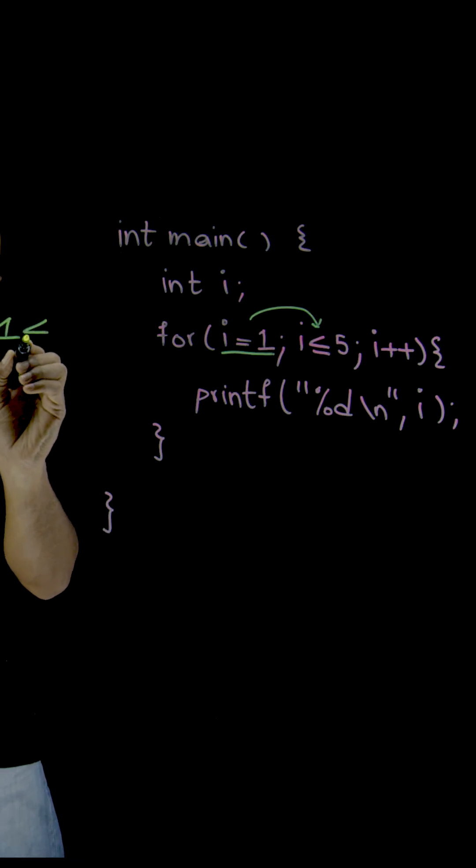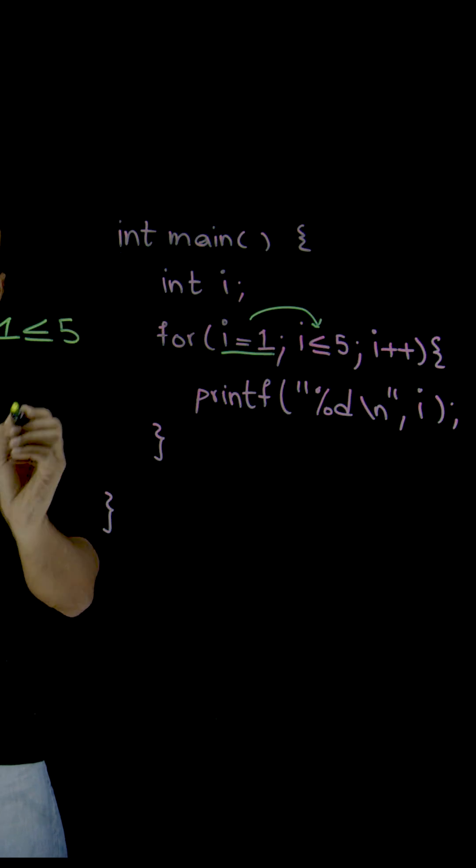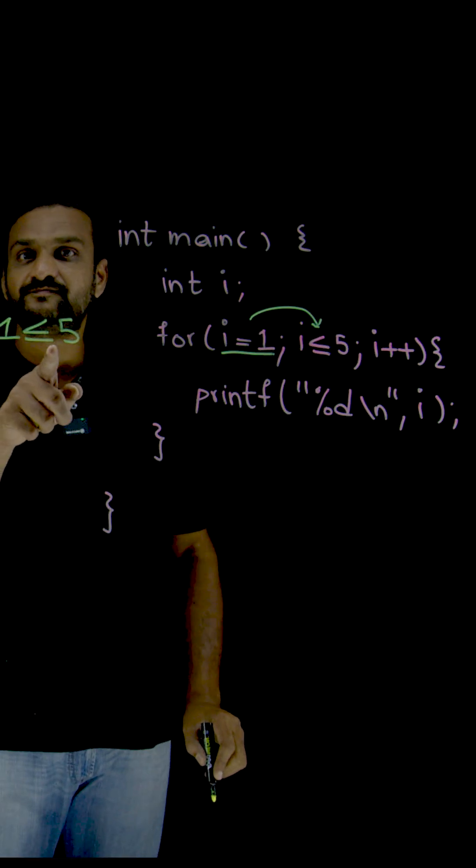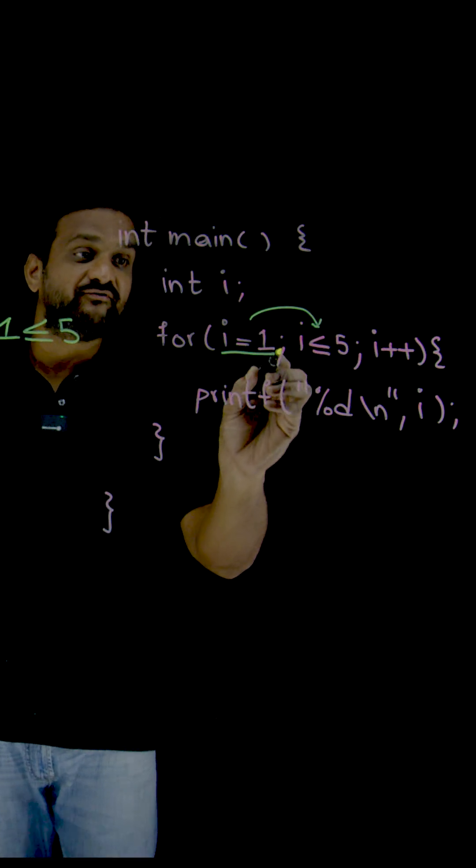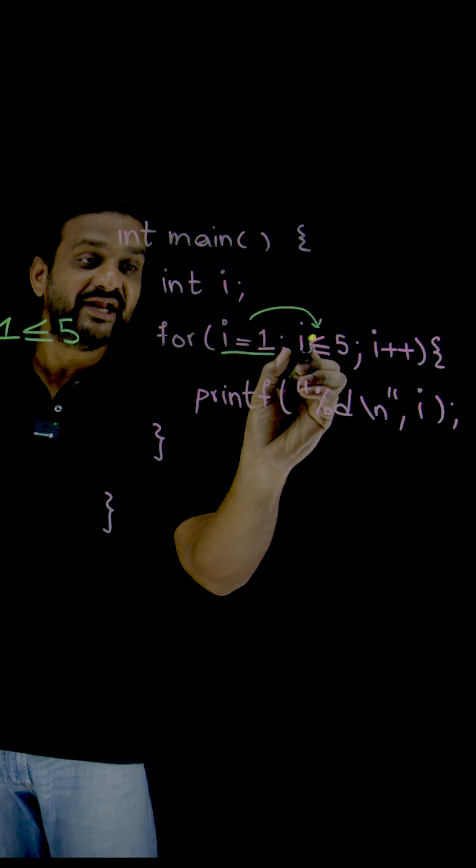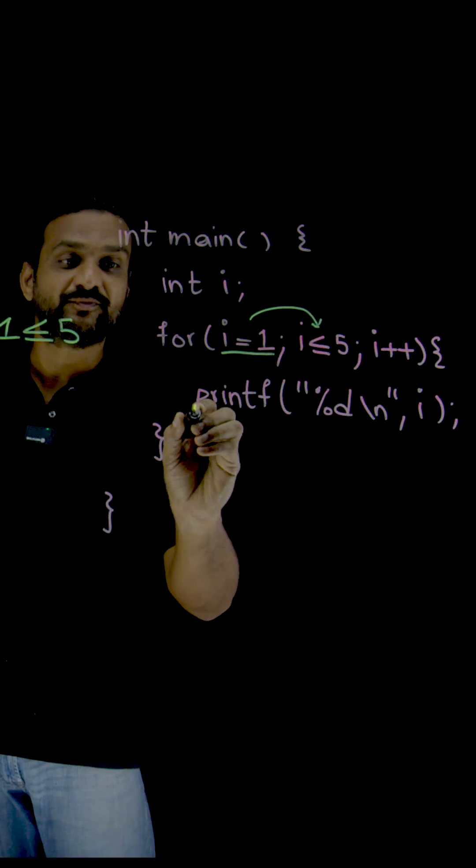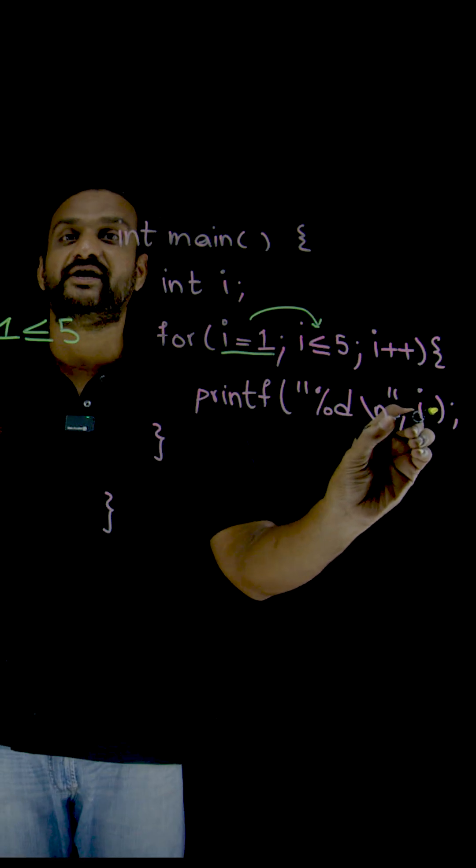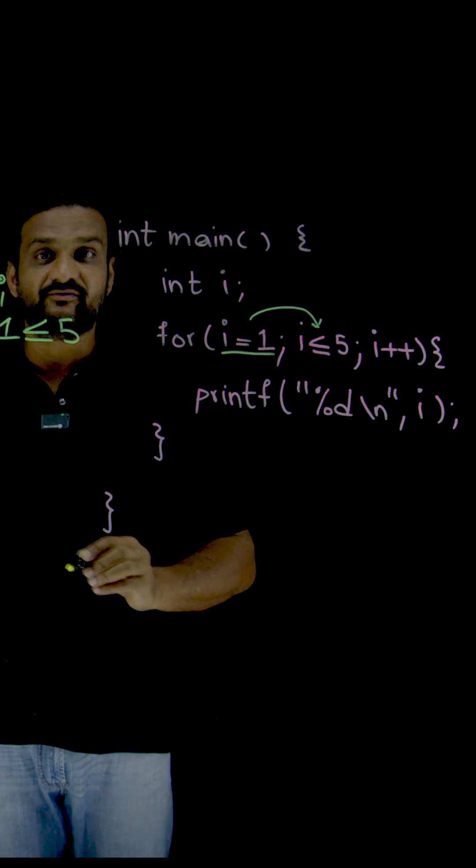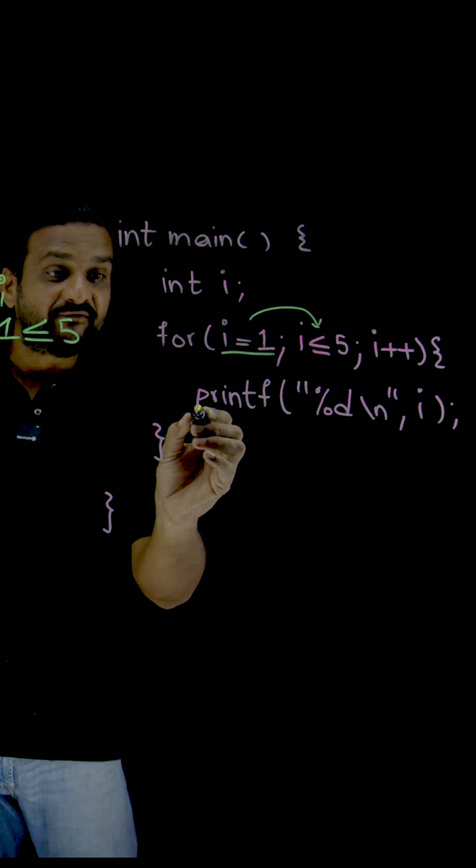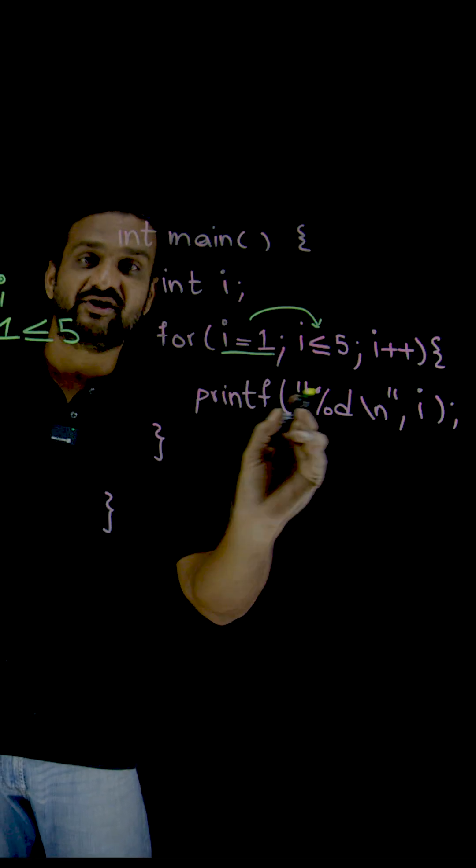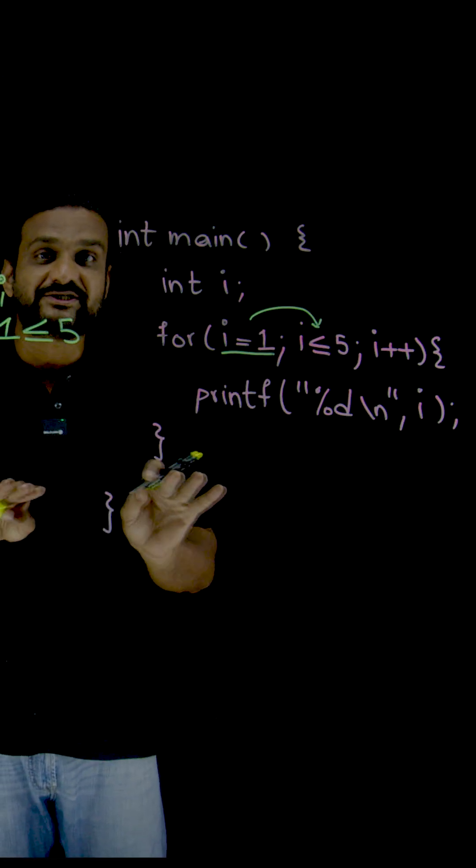We are going to check whether 1 is less than or equal to 5. Is it true? Yes, it is true. The value of 1 is less than or equal to 5. Now once this is true, we will enter into the for loop and this part will get executed. 1 will get printed in your final output. Now after completion of all the statements, all the statements within the for loop has been executed.